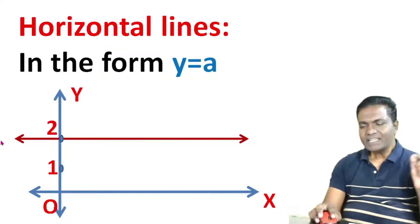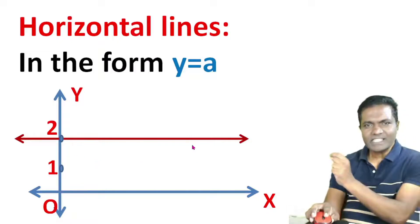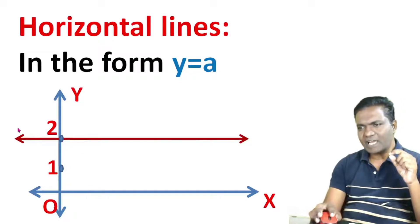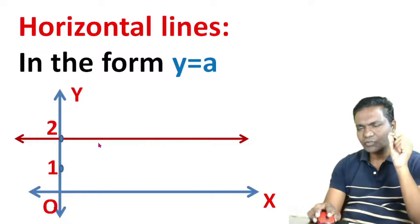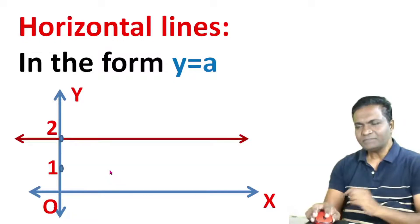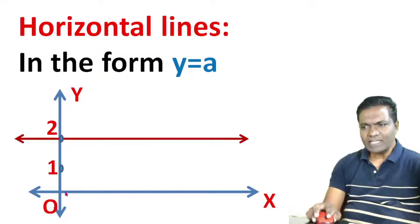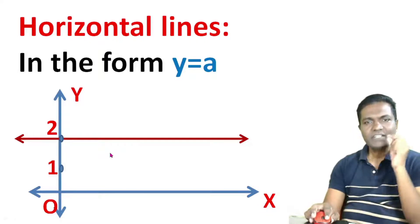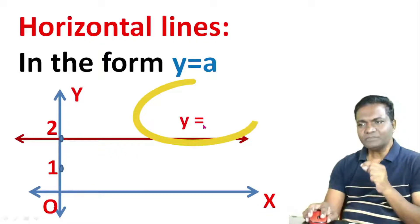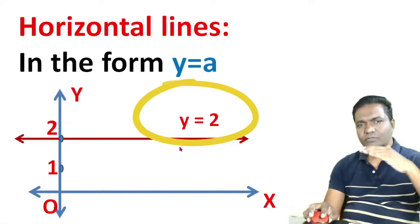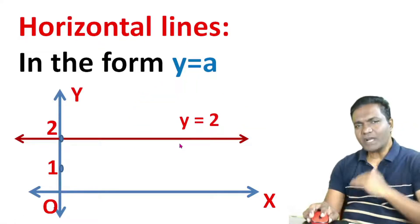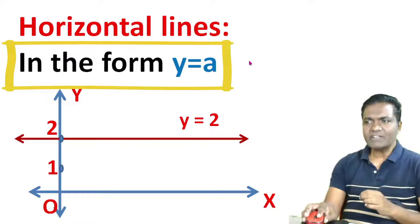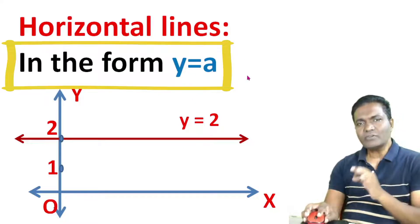So the lines that are horizontal — for example, Y is fixed. Y equals 2 means Y is always 2 on this line. X can change. So the equation is y is equal to some constant.